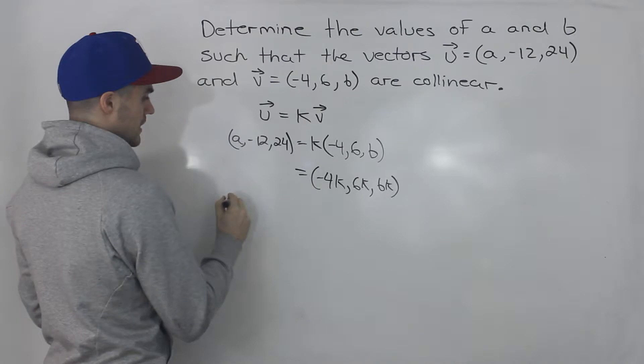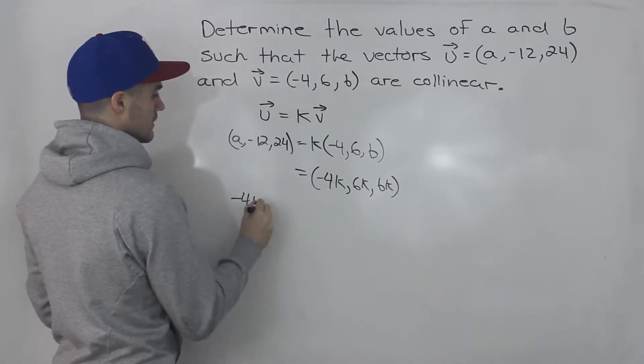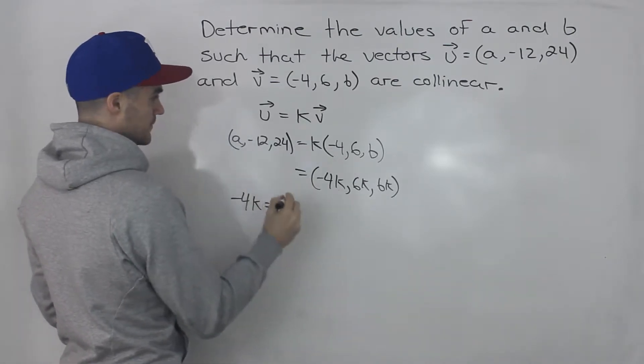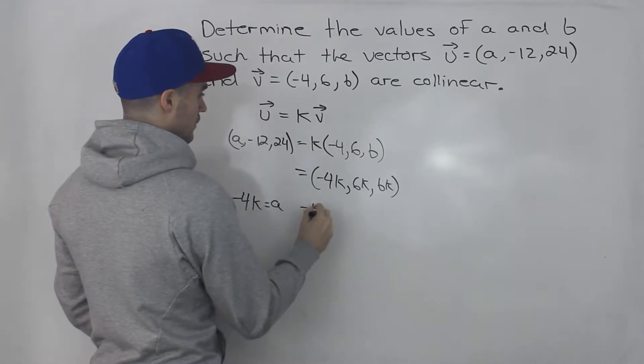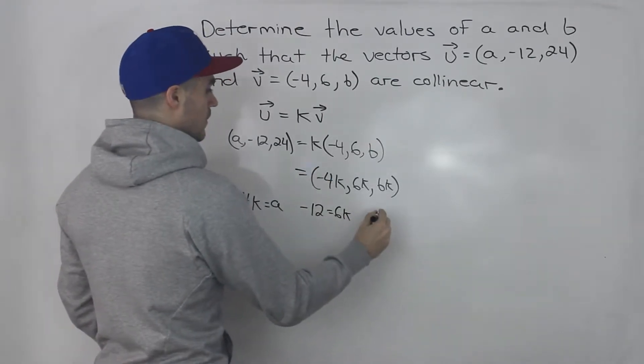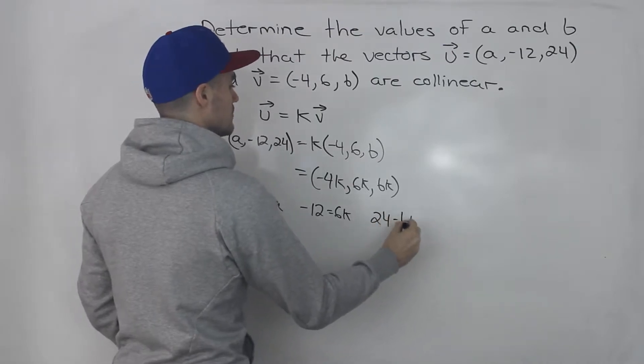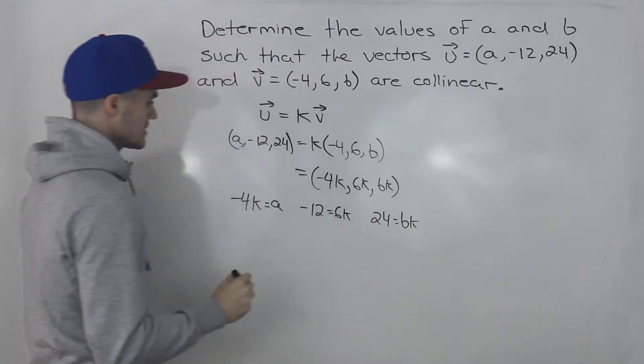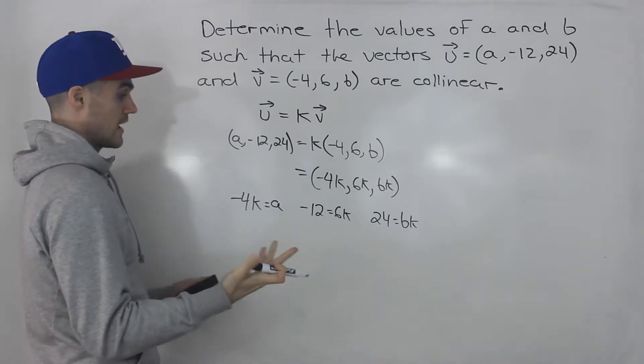So notice how we can make equations. So -4K has to equal A, -12 has to equal 6K, and then 24 has to equal BK. And you basically want to find the one where you can solve for K.